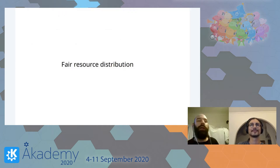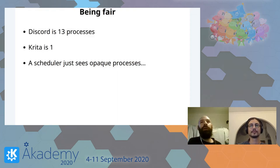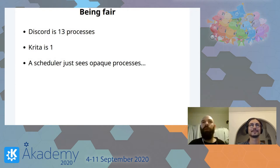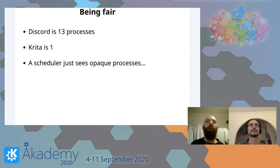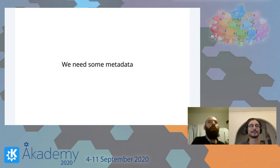The other problem is fairness. Discord as a Flatpak has 13 processes; Krita, an advanced graphical application, is one. Krita is obviously going to use your CPU because it's an intense graphical application. Discord is going to use your CPU because it's written in Electron. How are you going to divide resources fairly? A scheduler has even less information — it sees 14 opaque processes with no idea what they really correspond to. We need metadata that propagates all the way down to the system level so it's available to schedulers.